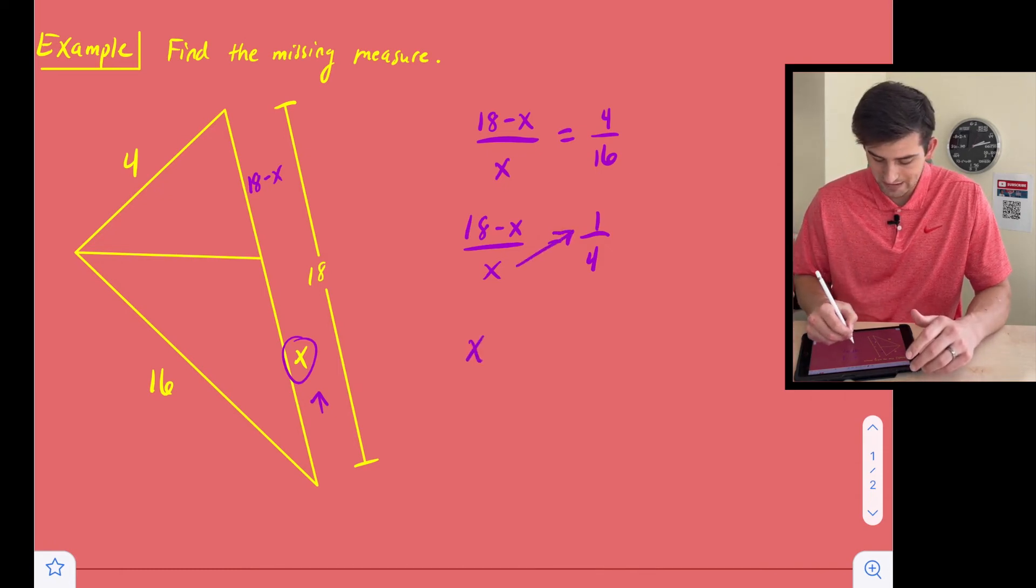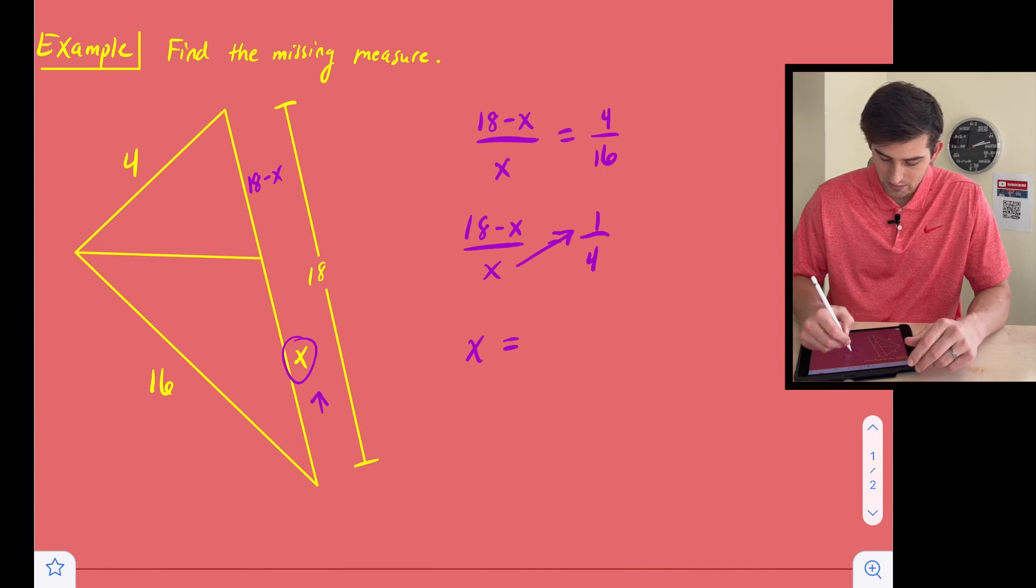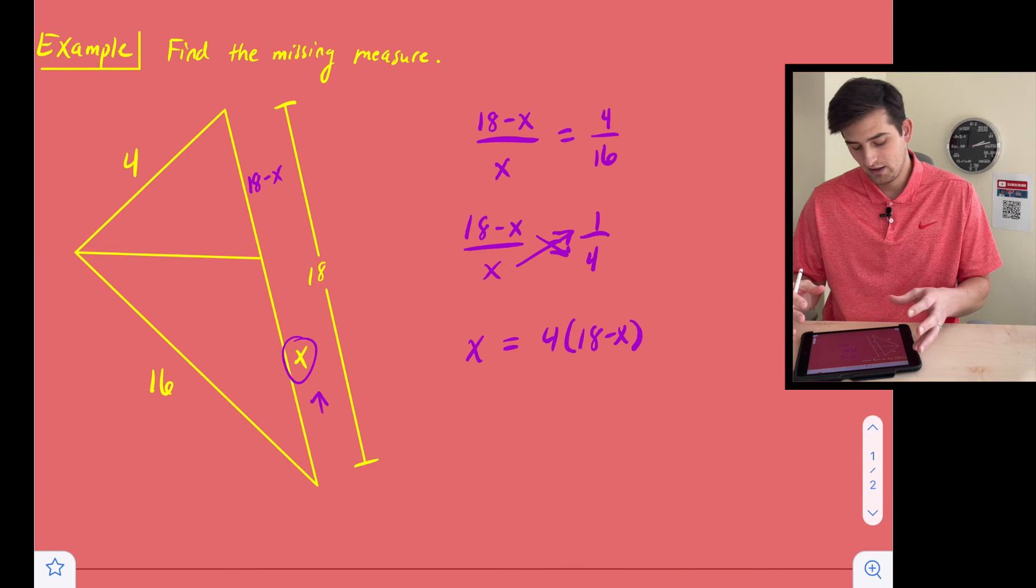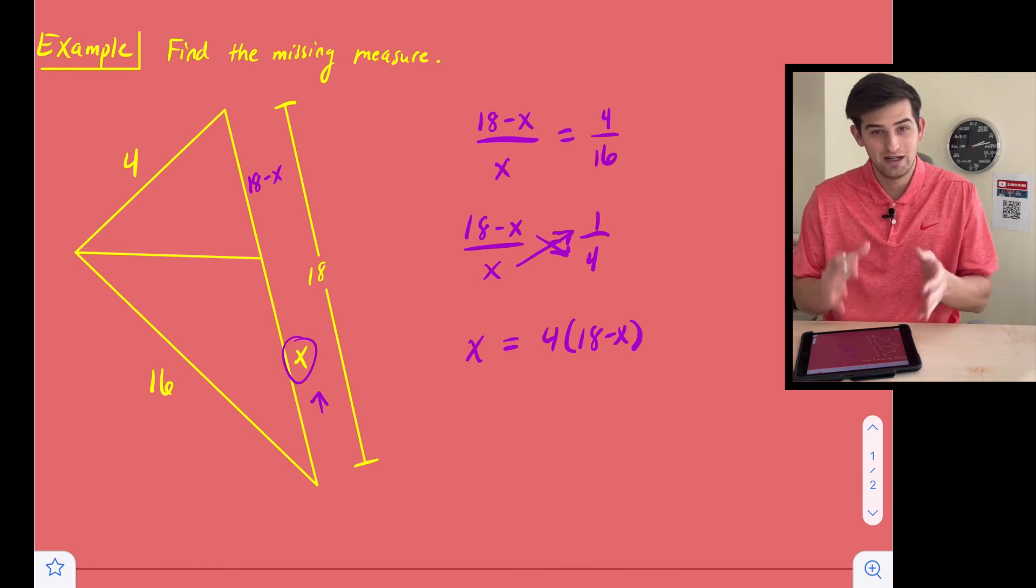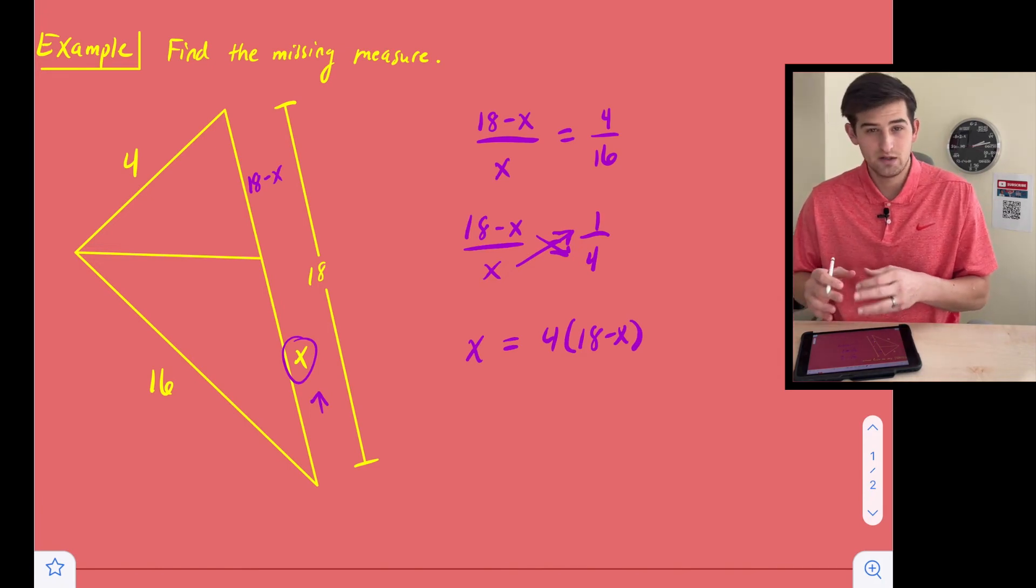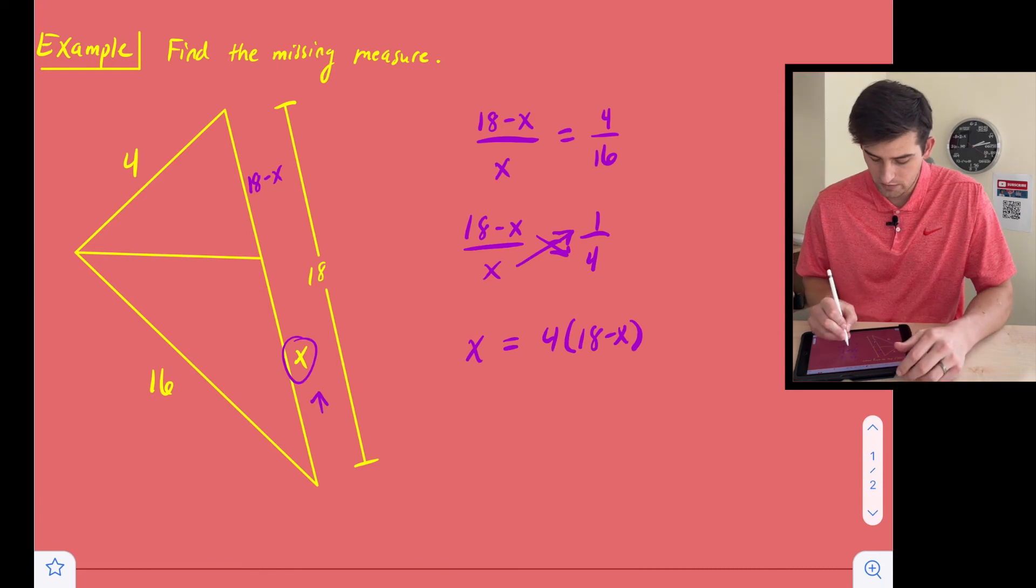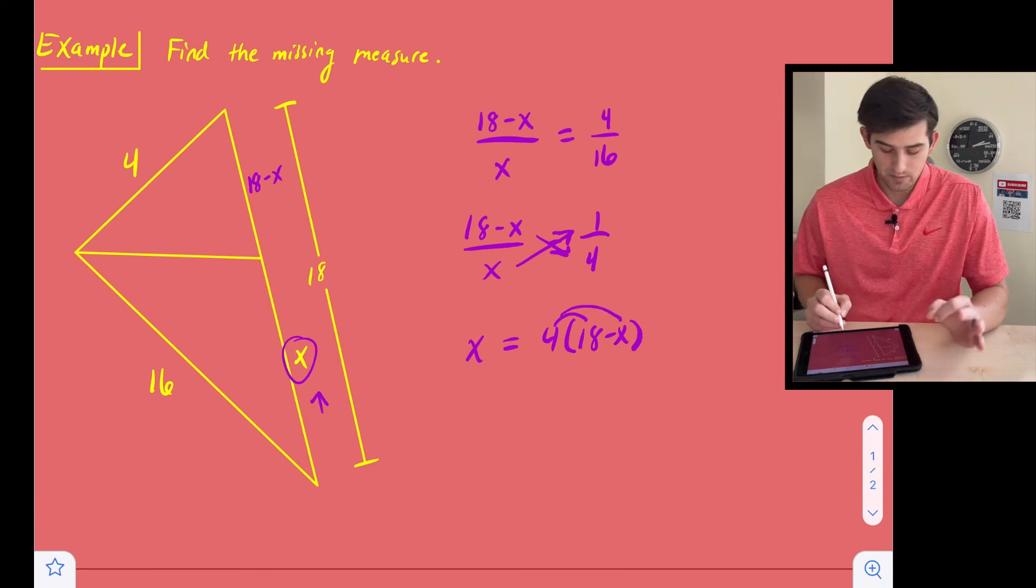So X times 1, that's nice because that's just X. And then we can do 4 times 18 minus X, right? And notice I wrote that. I didn't do that in my head right now because I want us to make sure we see we need to distribute that 4. So we need to multiply the 18 and the negative X by 4.